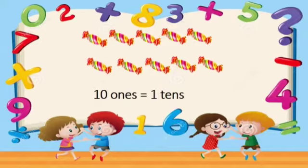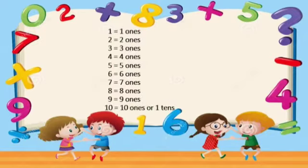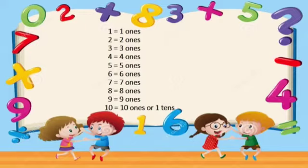When we talk about the ones place, we always use 1 ones, 2 ones, 3 ones, 4 ones, 5 ones, 6 ones, 7 ones, 8 ones, 9 ones. But 10 — here we have 10 ones, or 1 ten.